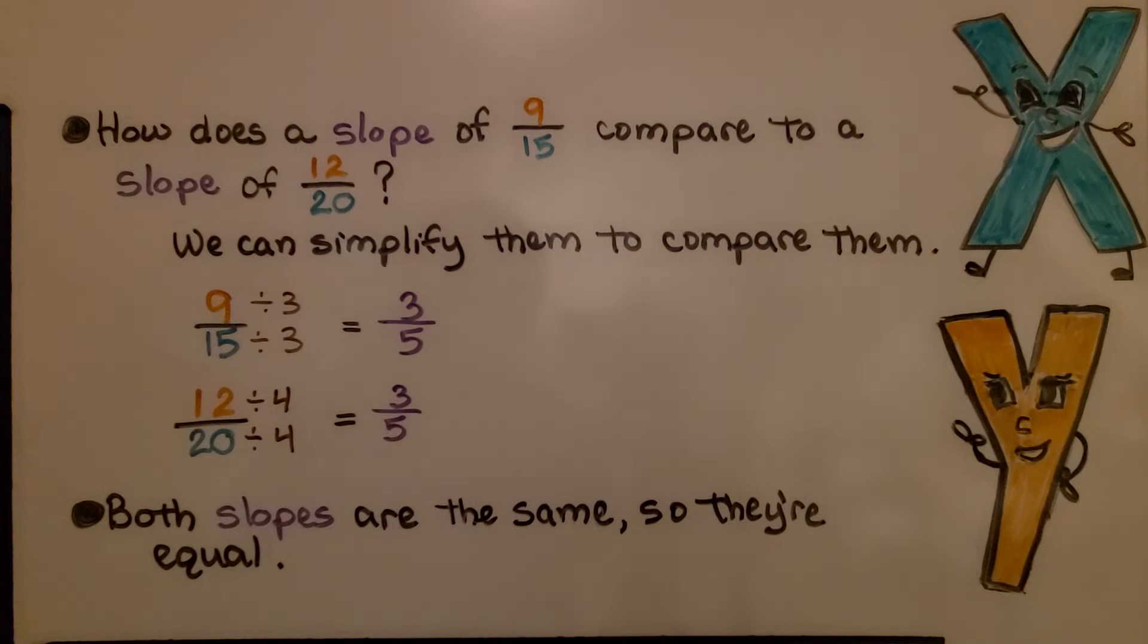How does a slope of 9 15ths compare to a slope of 12 20ths? We can simplify them to compare them. 9 15ths simplifies to 3 fifths. 12 20ths simplifies to 3 fifths. Both slopes are the same, so they're equal.